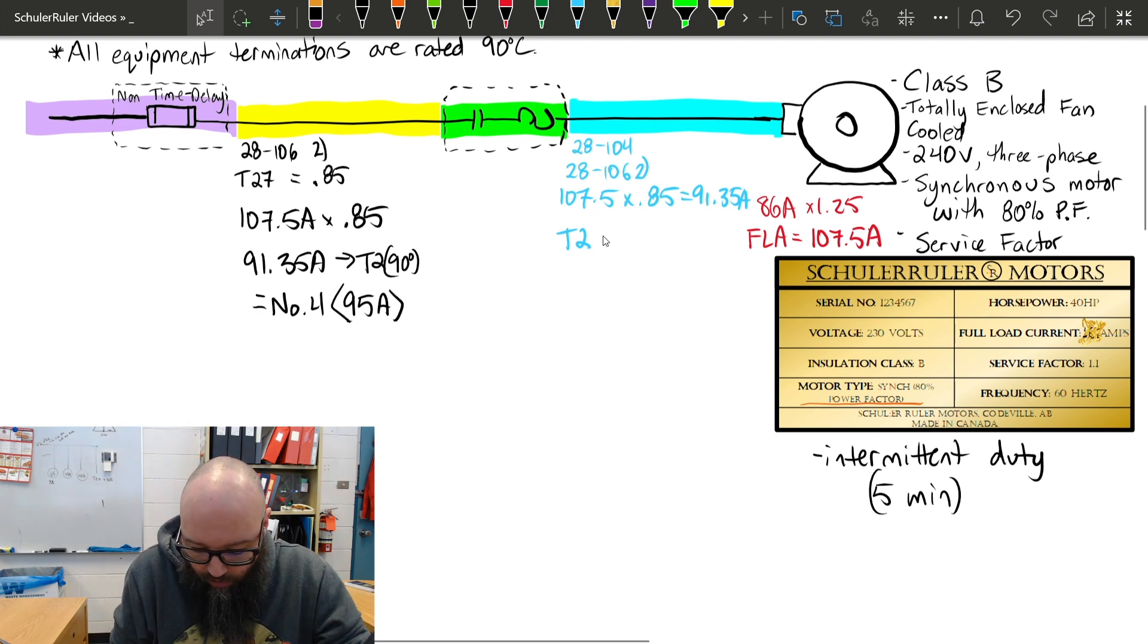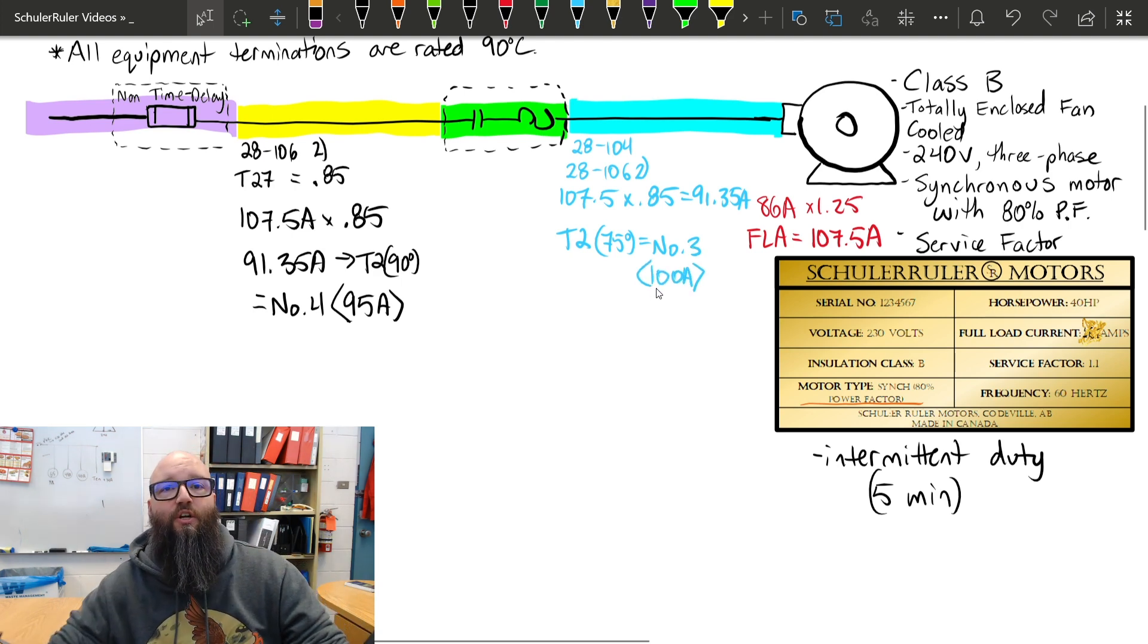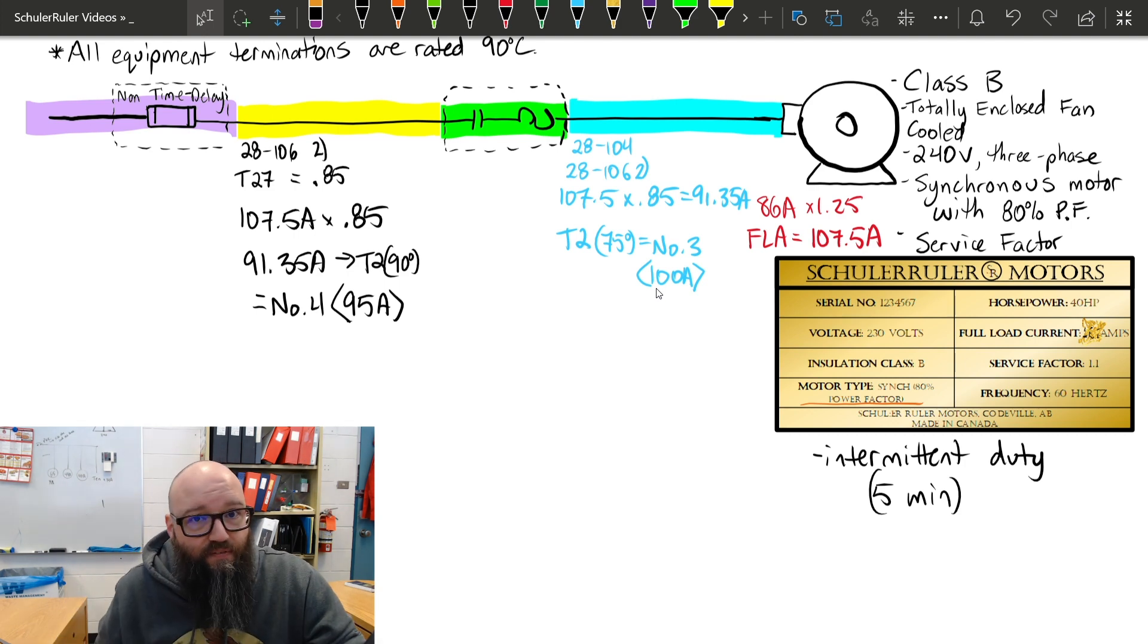We use a 75-degree column for those motor supply conductors, and it actually ends up yielding a number 3. That is good for 100 amps, which makes sense. We see a slightly larger conductor on that motor supply. Think of it acting like a heat sink. That's not specific to synchronous motors. That's just motor supply conductors in general. Always pay attention to that 75-degree note, unless it's a Class A motor and we're using 90-degree insulation temperatures as it notes in 28104 subrule 3.